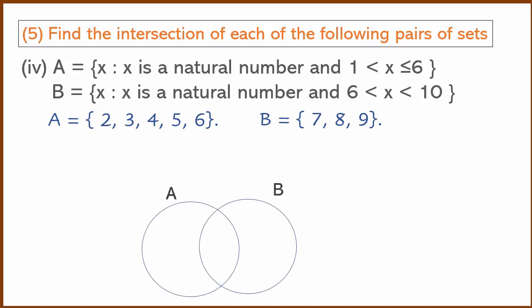Drawing the Venn diagram for A and B. A contains {2, 3, 4, 5, 6}, and B contains {7, 8, 9}. There is no common area between them. The intersection is the null set or empty set.